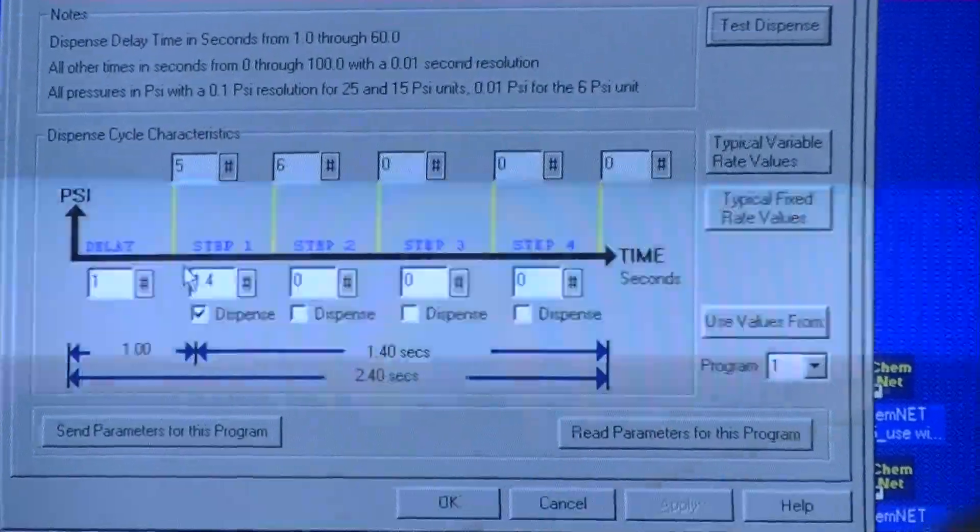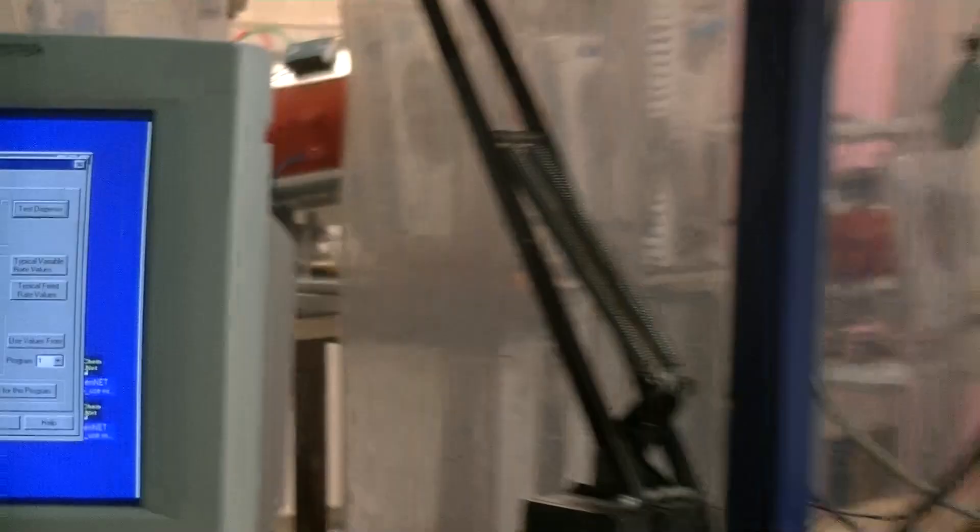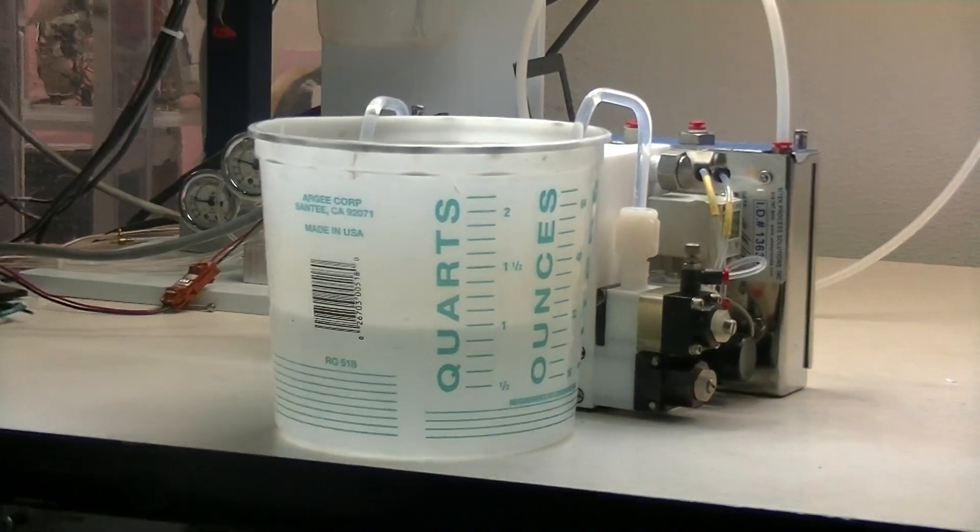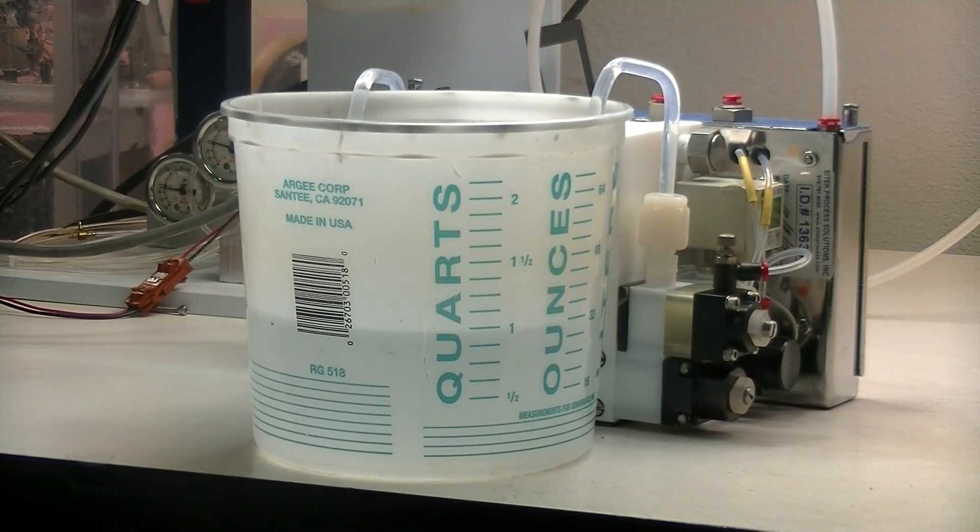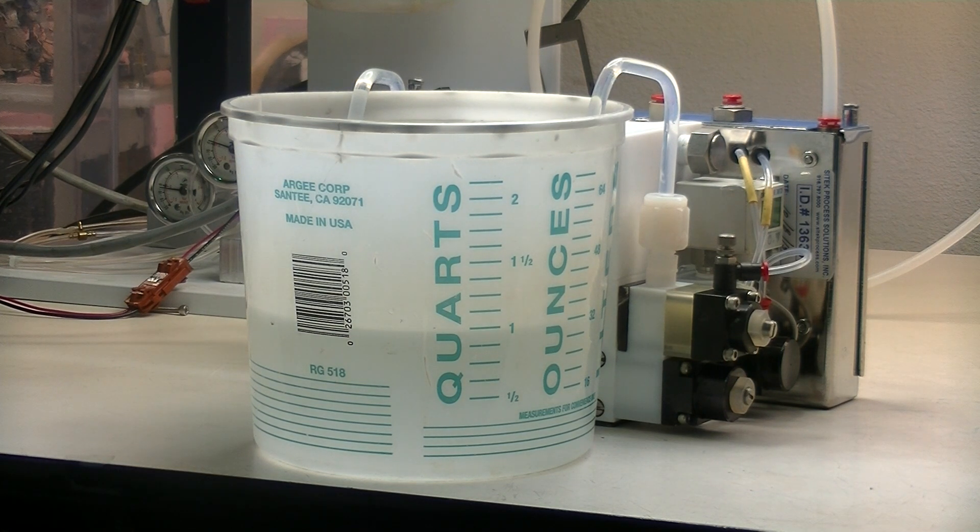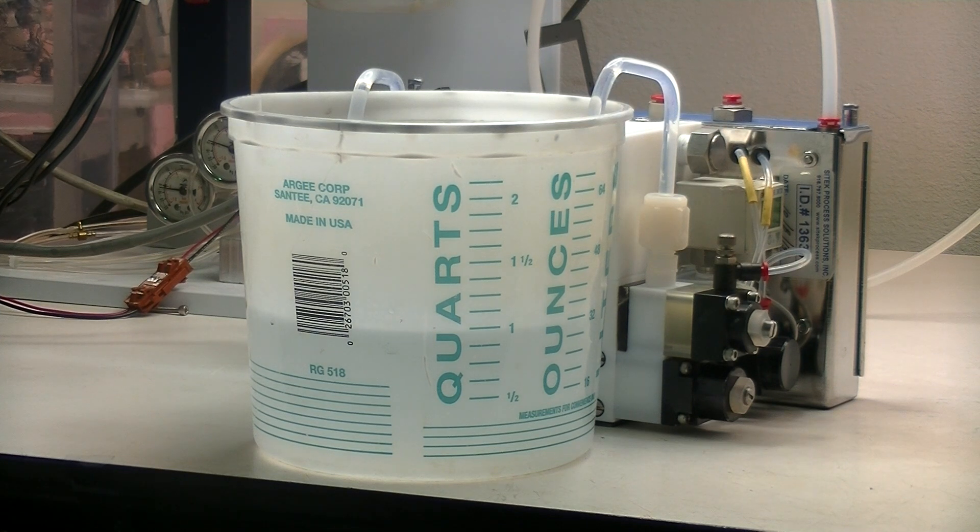Now, we'll come over to the catch cup over here on the table when we start dispensing for you to look at the suck back bubble and watch the dispense. This pump was also checked volumetrically. We dispensed into different volumetric cylinders, and every time it was exactly repeatable to the dispense we did before it. So this pump is in really good shape, and we've done lots of testing to make sure.